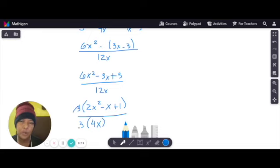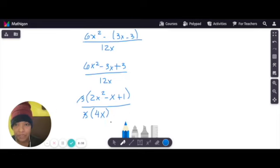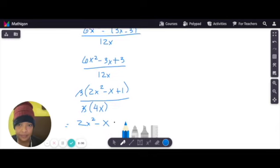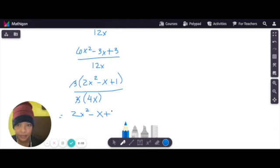You can only cancel kapag they are separated by product. Hindi pwede yung addition. Isa po yan sa mga ano nyo. Hindi tayo basta-basta pwede mag-cancel. This is 2x squared minus x plus 1 over 4x. Hindi po. Wala pong ano. Unless mag-synthetic division tayo. That is your final answer po. 2x squared minus x plus 1 over 4x.